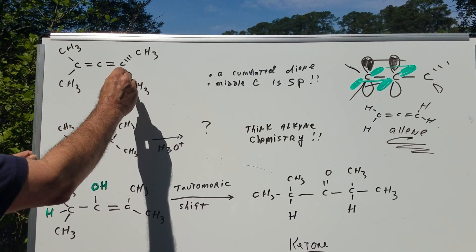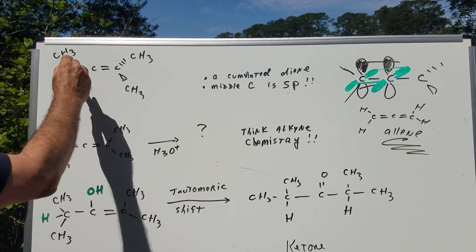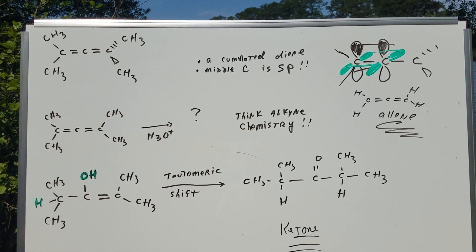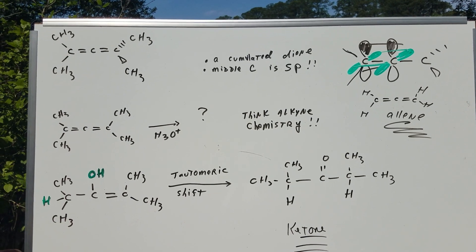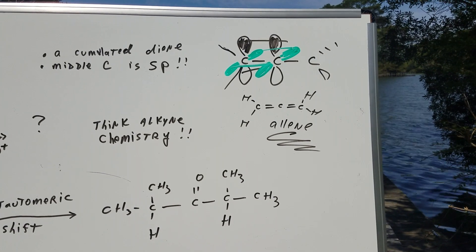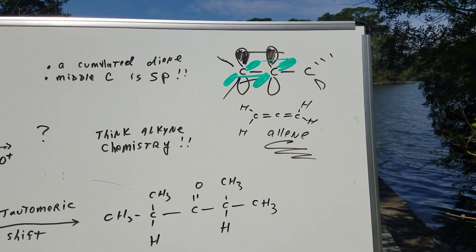And that's nicely illustrated here. As you can see, this is coming out of the board, this is going into the board, and these are in the same plane. So you want to make sure you at least understand that the simplest cumulated diene is called allene, in which we have all H's on all those groups.